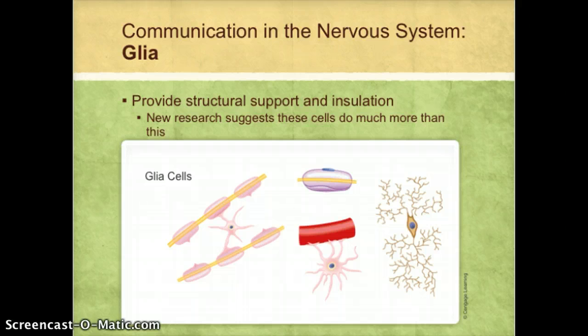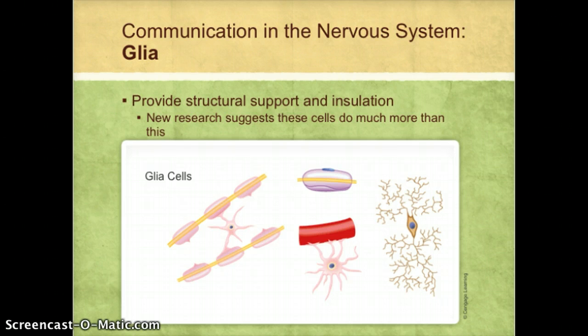However, newer research suggests that these cells do much more than this. We're starting to understand that they also bring nutrients to the neurons and remove waste products. If they're not functioning properly, this could influence the nervous system and behavior.